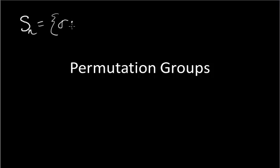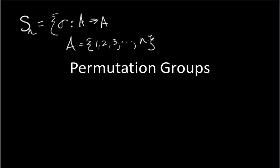This video is on permutation groups, so let's review what a permutation group is. We designate it by S_N, which is the set of all one-to-one mappings from a set A to A. A is the set containing the numbers 1, 2, 3, up to N. So these elements of S_N are one-to-one functions that map a set of N elements to itself. The set of all one-to-one mappings from the set A to itself is called a permutation group on N letters.